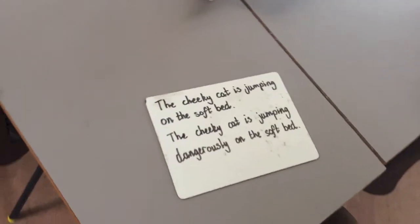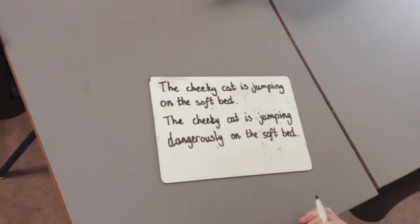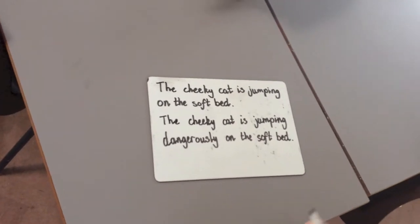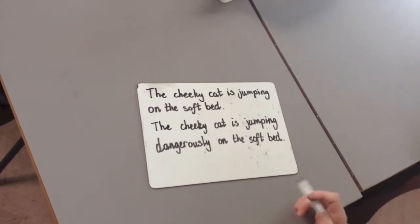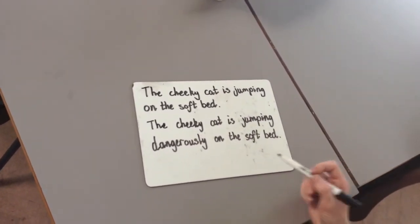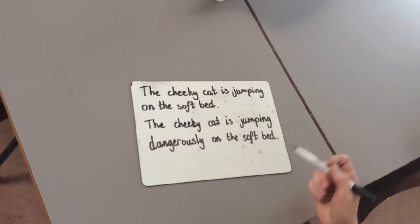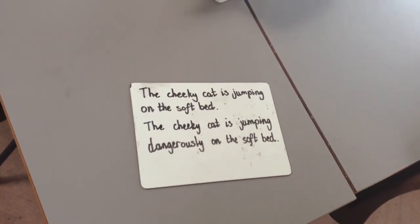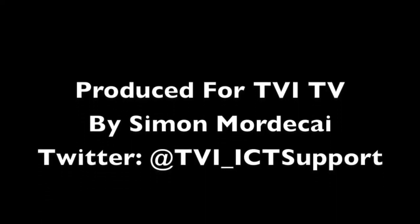So the key to ly words is just thinking about how something is being done. In this sentence, it's thinking: how is the cat jumping? And that's our ly words. We're up all night to get ly!